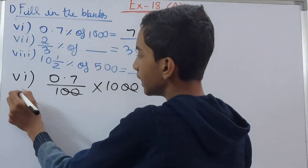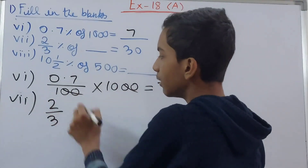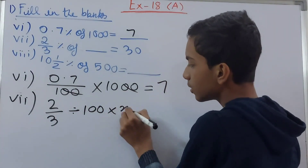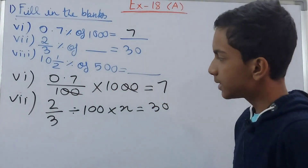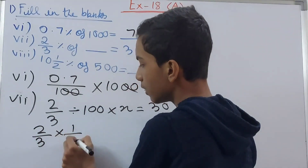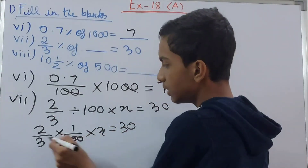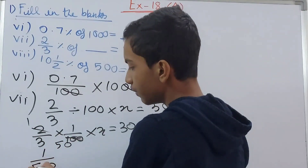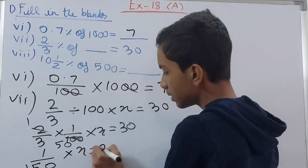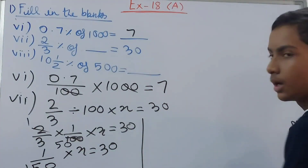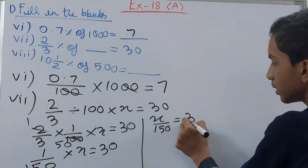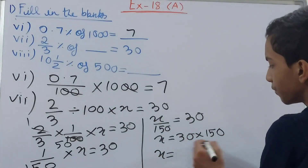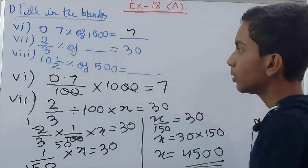Seventh part: 2/3% of blank = 30. Assume the unknown as x. Write 2/3 divided by 100 as 2/3 × 1/100, then multiply by x: 2/(3 × 100) × x = 30. This gives 1/150 × x = 30, so x = 30 × 150 = 4500. Therefore 2/3% of 4500 equals 30.